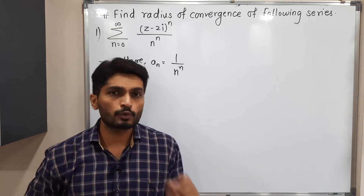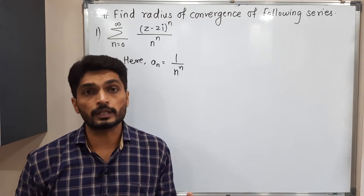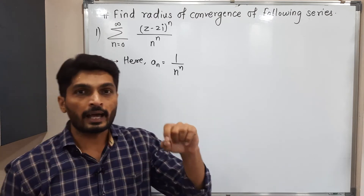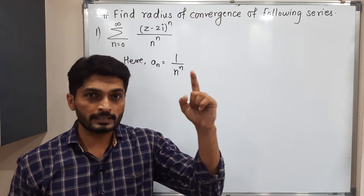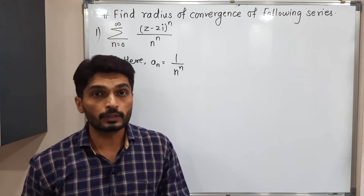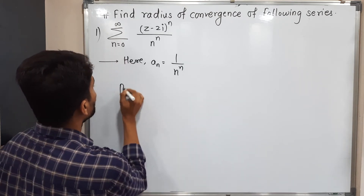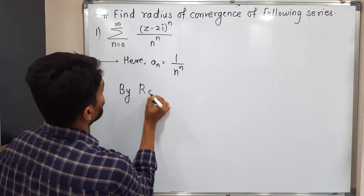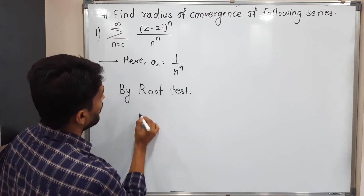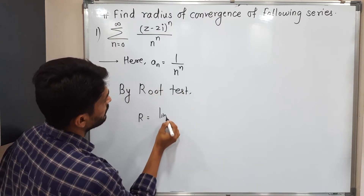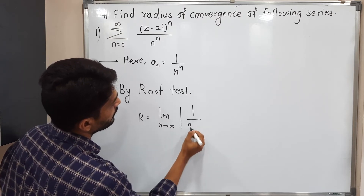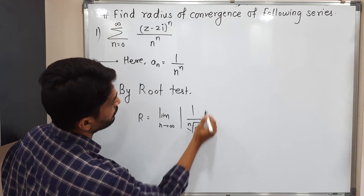This problem can be solved either by ratio test or root test. But since a_n has n raised to the power n — an nth power — it is better to go with the root test. By root test, the radius of convergence r is equal to the limit as n tends to infinity of the nth root of the modulus of a_n, which is the nth root of 1 upon n raised to n.